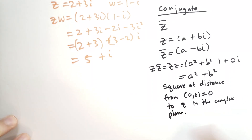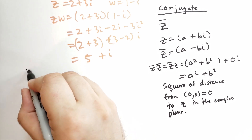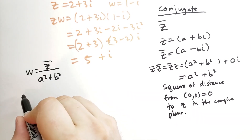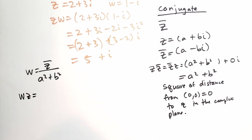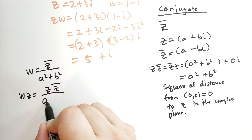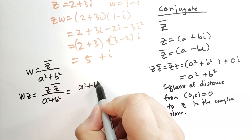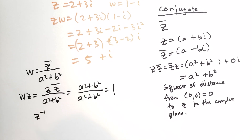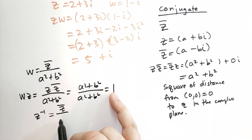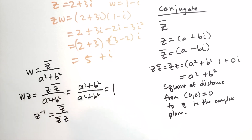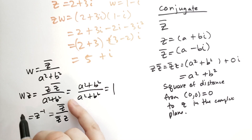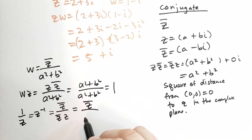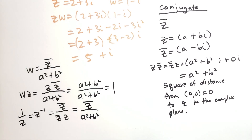What is the multiplicative inverse of Z? Suppose W equals Z-bar divided by A squared plus B squared. When we take W times Z, we get Z times Z-bar over A squared plus B squared, which equals A squared plus B squared over A squared plus B squared, which gives you 1. So the multiplicative inverse of Z is Z-bar over Z·Z-bar, or equivalently just 1 over Z. The formula is Z-bar divided by A squared plus B squared.